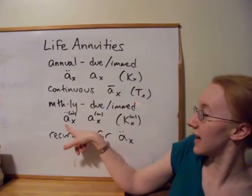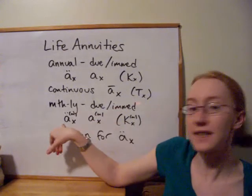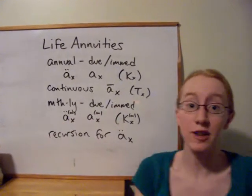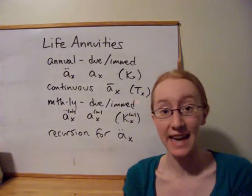So the difference between this case and this case is that this case is just 1 over m dollars larger, because there's a guaranteed payment of 1 over m at time 0.